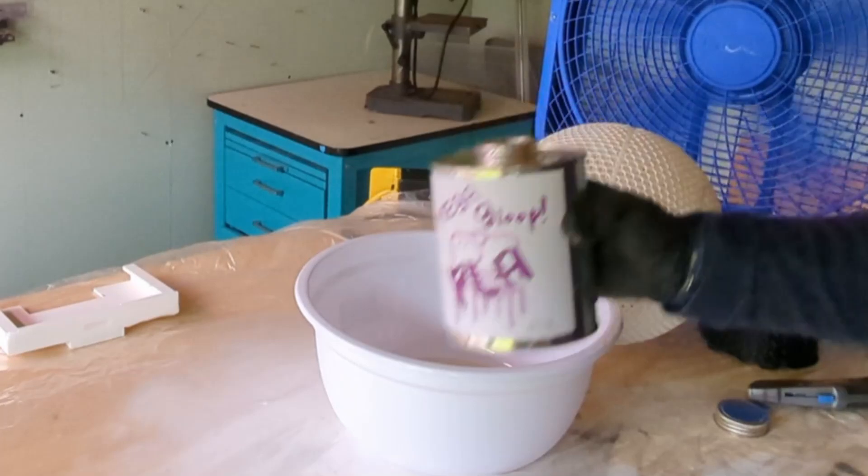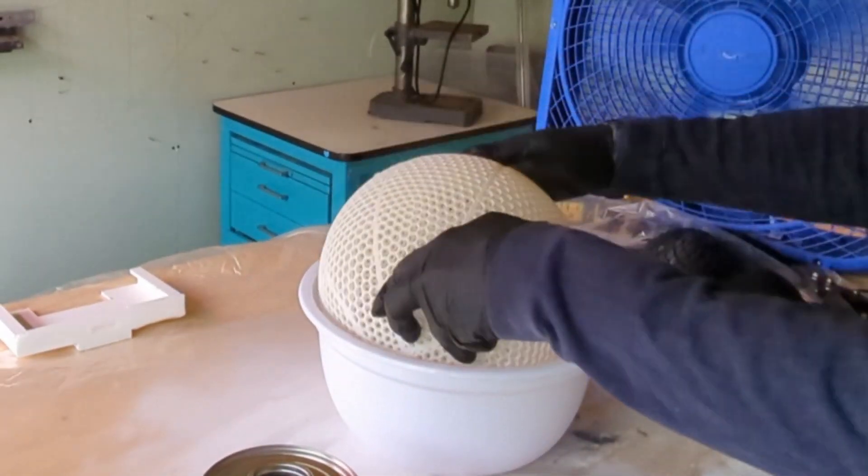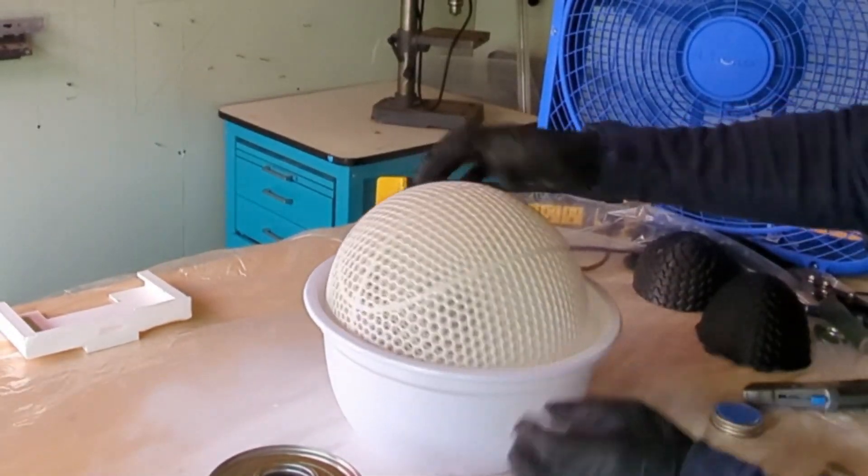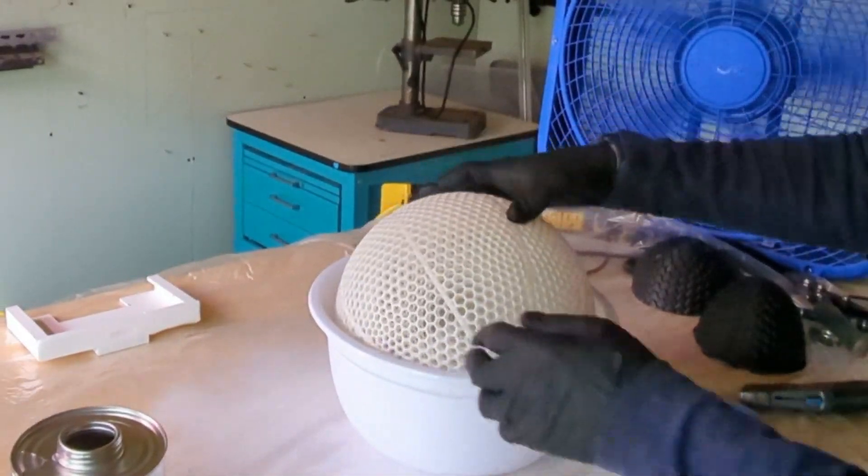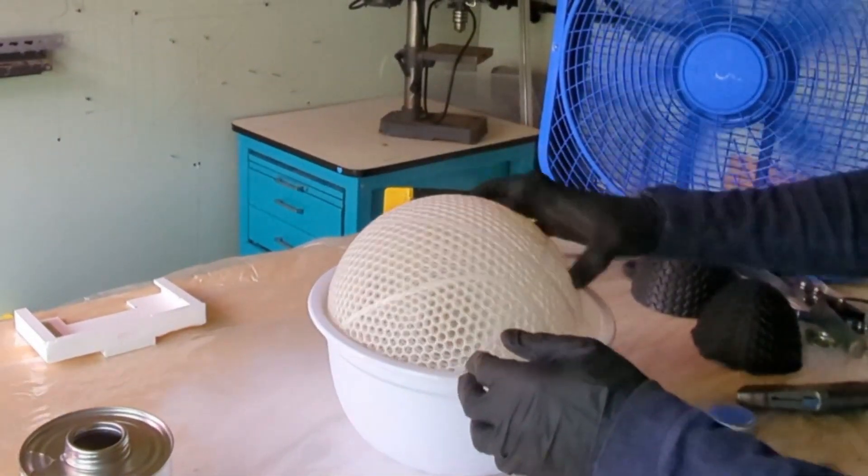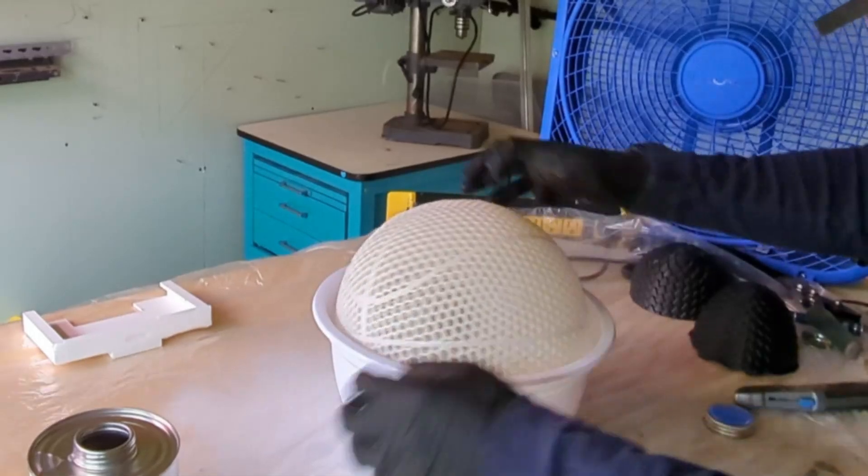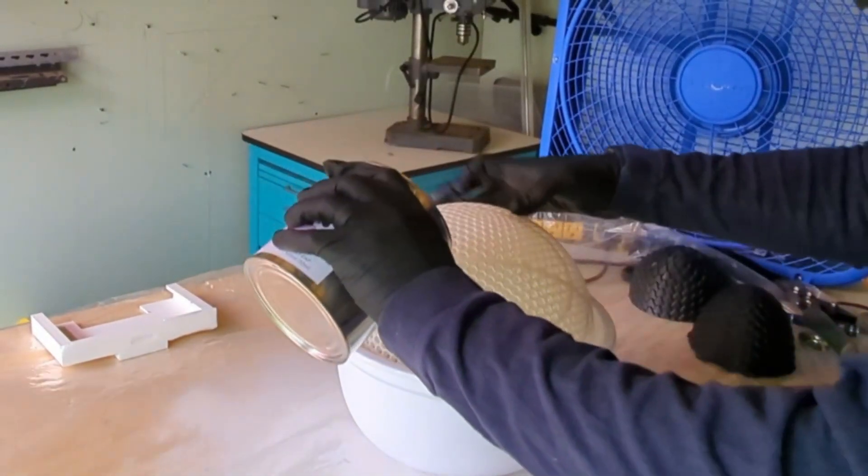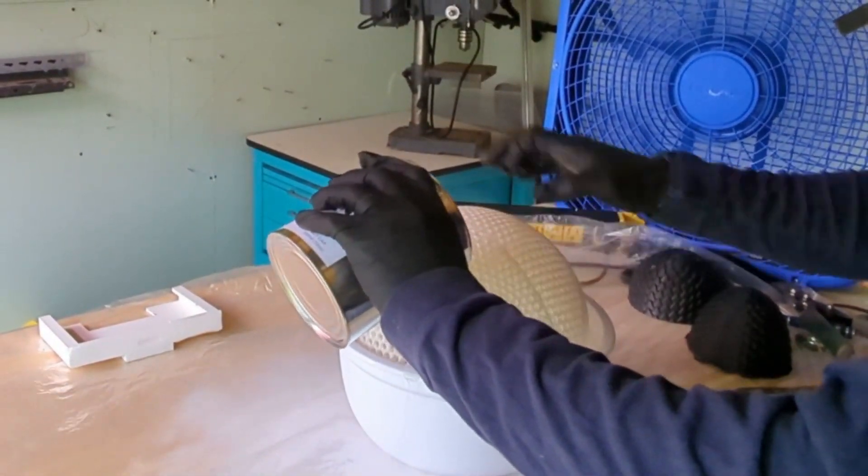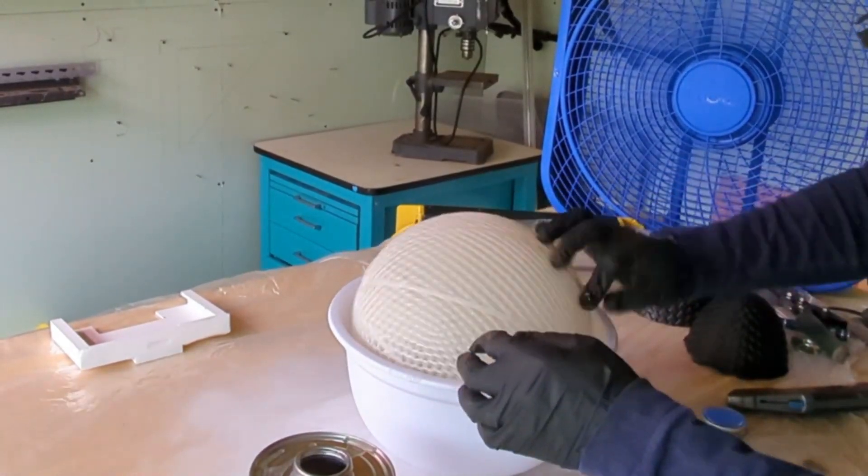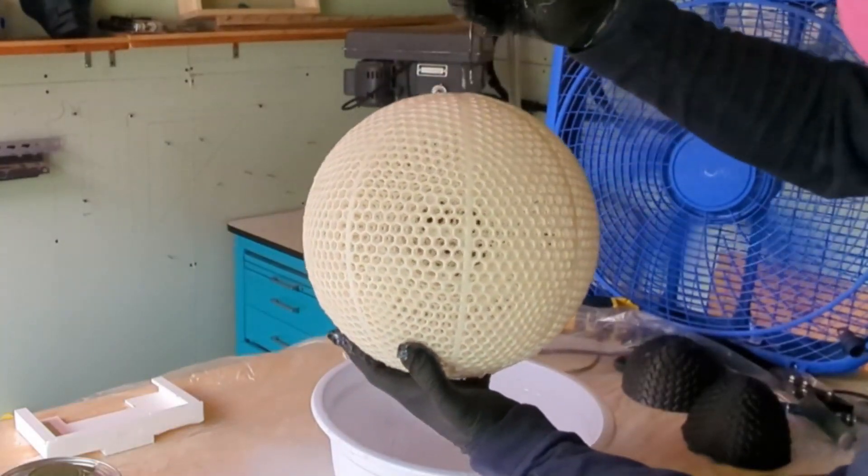When I was good to go, I went ahead and poured in a bunch of 3D Gloop into the bottom of the bowl, and then just started swirling the Super PLA Plus basketball around in the 3D Gloop. Since I was using a double lattice file compared to the single lattice file that it looked like Uncle Jesse used, I was having a hard time getting the 3D Gloop into the internal lattice.